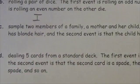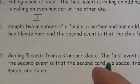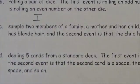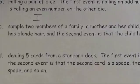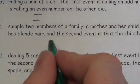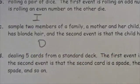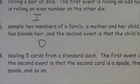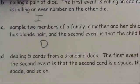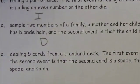Sample two members of a family: a mother and her child. The first event is that the mother has blonde hair and the second event is that the child has blonde hair. I'm no geneticist, but it stands to reason that if the mother has blonde hair, there's a fairly strong probability that the child will have blonde hair. So these are dependent — that first event does have an impact on the second event.